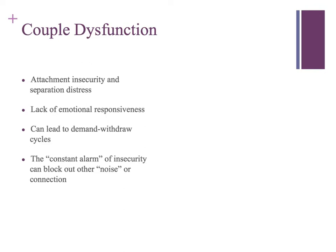This is similar to things we've talked about in other theories — in structural, when couples are fixated on either not having differences or are warring over differences, that's a form of separation distress. Reactivity to any sort of distancing in Bowen theory is also like separation distress. Dysfunctional couples may also have a lack of emotional responsiveness, which most likely will look like a demand-withdrawal cycle, where one partner is more openly expressing an emotional need and another partner is non-verbally withdrawing from that request for comforting or validation.